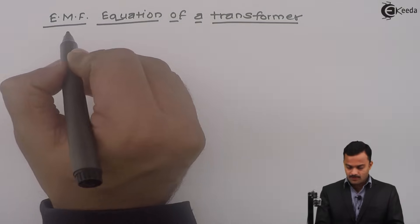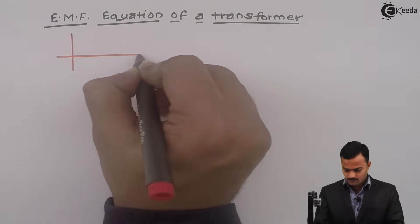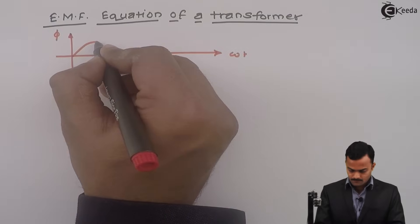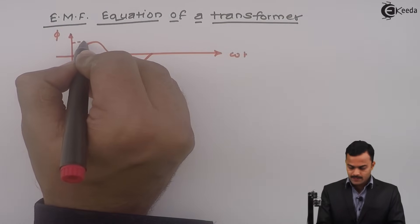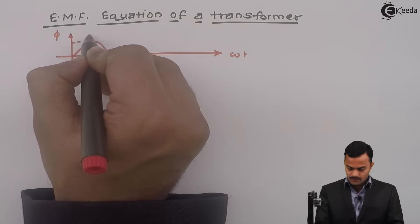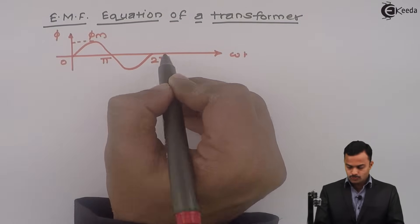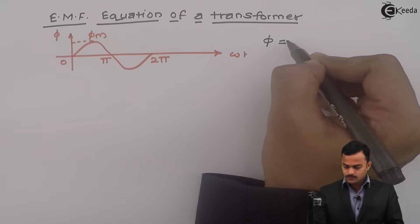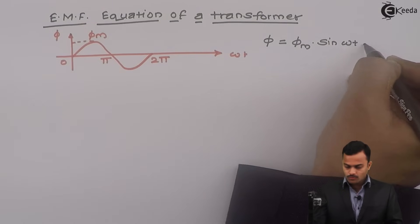I'm having a flux waveform like this. A sinusoidally varying flux waveform I will get because I'm applying AC voltage. This is the maximum value of flux phi m, 0, pi, 2 pi. The equation of this waveform is phi equal to phi m sine omega t.